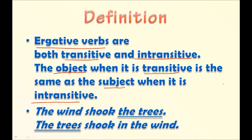Here's another example: 'The wind shook the trees.' 'Shook' is the verb, and 'the trees' is the object — so it's transitive. In the second sentence: 'The trees shook in the wind.' 'Shook' is again the verb, but now 'the trees' is the subject and there is no object — so it's intransitive. The object of the first sentence, 'the trees,' becomes the subject of the second — this is what we call an ergative verb.